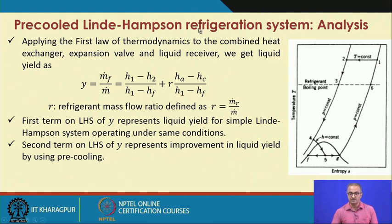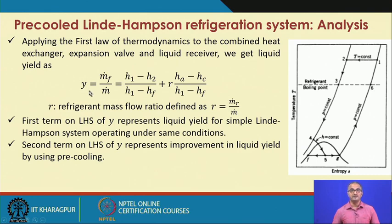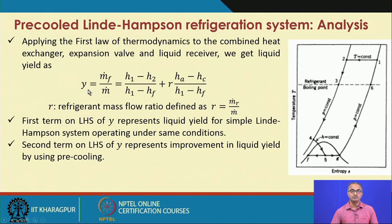This is the pre-cooled Linde-Hampson liquefaction system. This ratio R determines the liquid yield — if we increase the flow rate of ṁR in the secondary auxiliary circuit, we can increase the liquid yield. So we need not play with the temperatures as we found was restrictive in the simple Linde-Hampson. We can play with R to increase the liquid yield so much that it can move towards 100 percent liquid yield — meaning all of the incoming gas is fully liquefied.